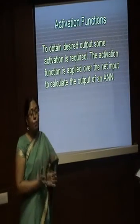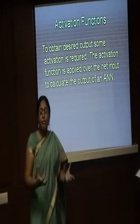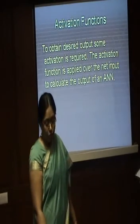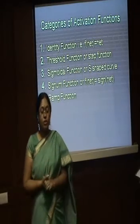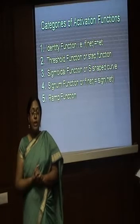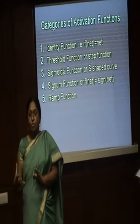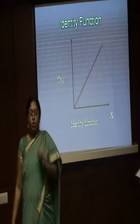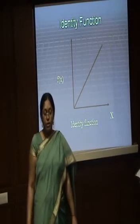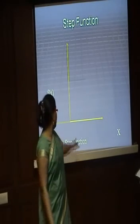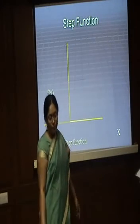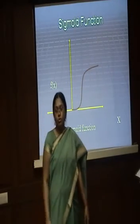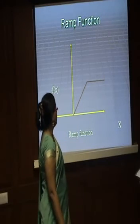Activation function: to obtain the desired output, some activation is required. The activation function is applied over the net input to calculate the output of the artificial neural network. The categories of activation functions are: identity function — f(net) = net; threshold function or step function; sigmoid function or S-shape function; signum function; and ramp function. The identity function is f(x) = x. The step function has a threshold point with two steps. The sigmoid function gives an S-shaped curve. These are the functions used for the neural network.